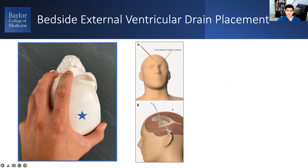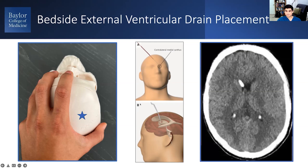If you aim perpendicular to the bone it won't fail you. Here is an example of an EVD that I recently placed, aimed into the right lateral ventricle toward the foramen of Monroe, which is where you want it.